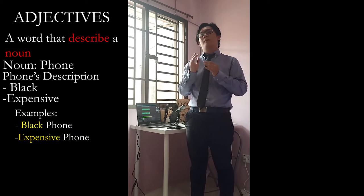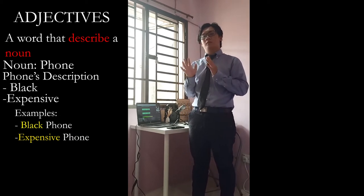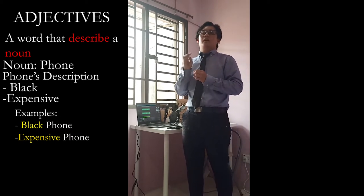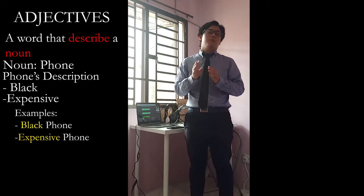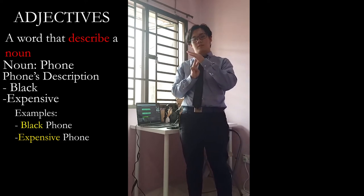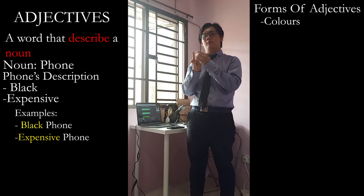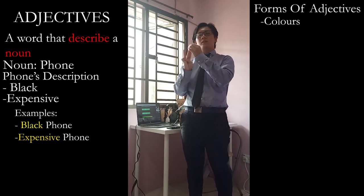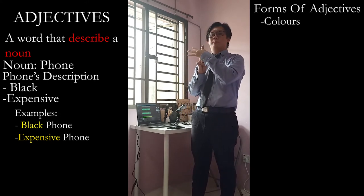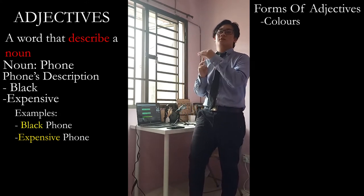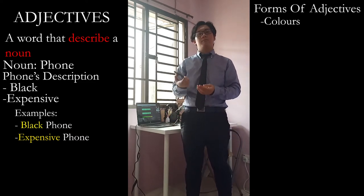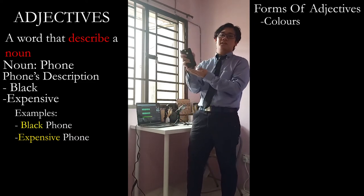Now, there are many forms of adjectives. But today, we are going to be focusing on three forms. Two of these I would like to call the obvious ones, and the other one is more opinion-based. So, the first one — a simple example — is color. Back to the phone: the phone is black.